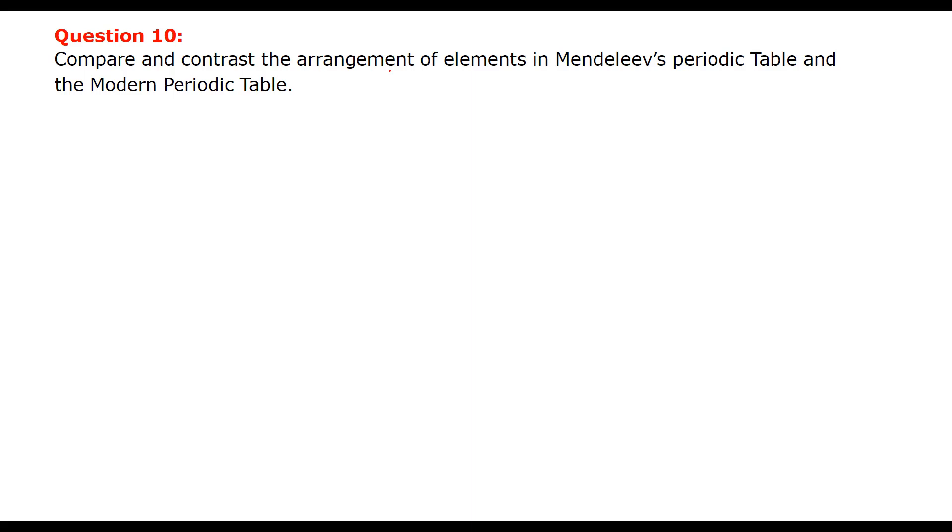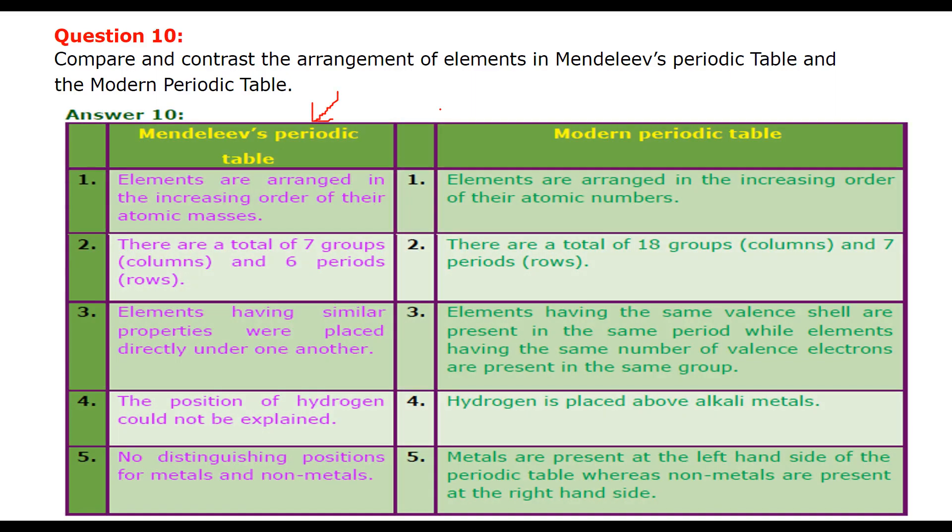Compare and contrast the arrangements of elements in Mendeleev periodic table and modern periodic table. So this is Mendeleev periodic table, this is modern periodic table. In Mendeleev, elements are arranged in increasing order of their atomic masses. While in modern periodic table, they are arranged again in increasing order, but not in terms of their atomic masses, but atomic numbers. This has to be, you must consider it and learn it.